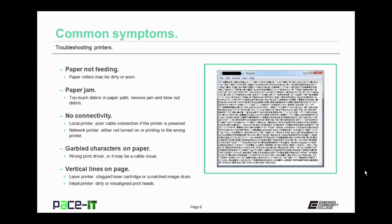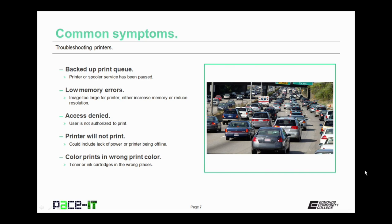Vertical lines on a page? In a laser printer, that's caused by either a clogged toner cartridge or a scratched image drum. On an inkjet printer, it's dirty or misaligned print heads. If you're experiencing a backed-up print queue, that's usually caused by either the printer being paused or the print spooler service being paused. Unpause the printer or the spooler service and that problem will go away. You may also get a low memory error, meaning the image you're trying to print is too large for the printer.